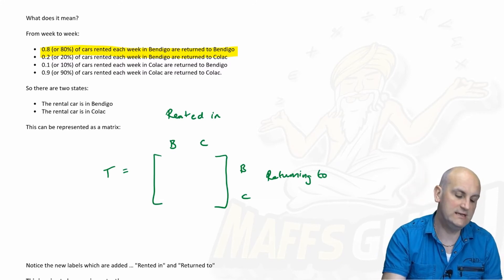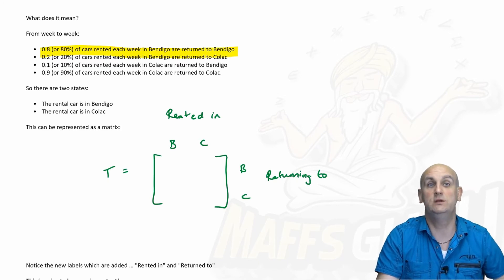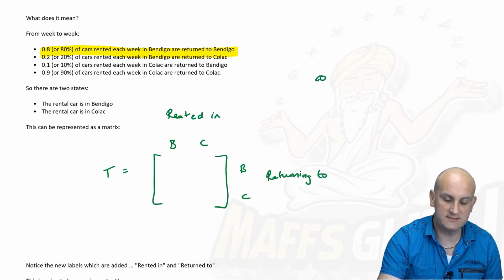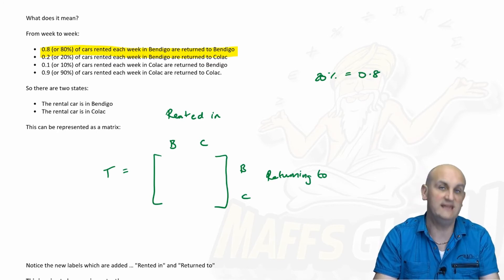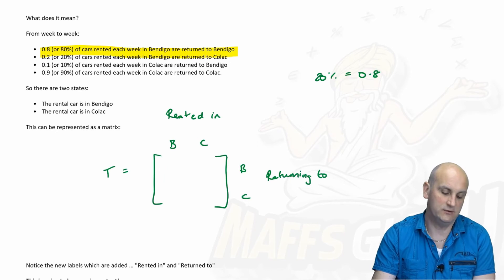Now the last thing is we never ever put percentages in our transition matrices. We use our decimal multipliers. And so we know that 80%, he says, is the same as a multiplier of 0.8. Why? Because percent divided by 100, 80 divided by 100 gives me 0.8.